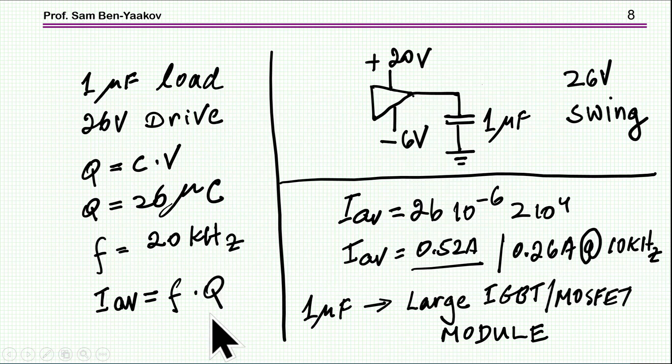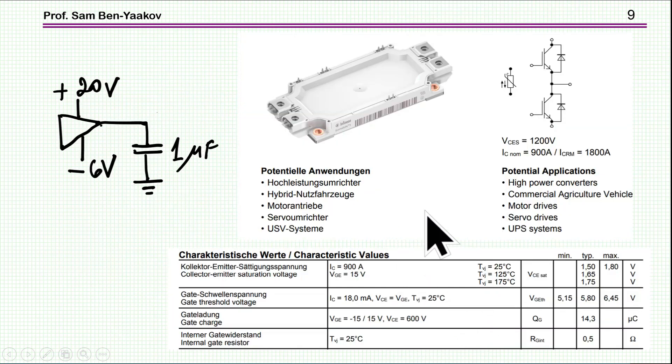Now, these currents are for, or these capacitance and charge are for really related to large transistors or IGBTs. And I am showing here an example. This will be a module. In fact, an Infineon module. This will be a 900 amp carrying IGBT. And in this case, you will find that the total charge is 14.3, while we are talking about 26 for the 1 microfarad. So this is actually twice the same. It's a really, really hefty load.